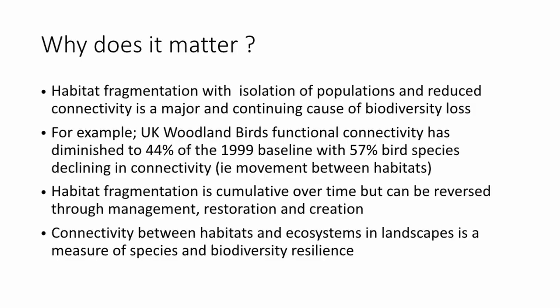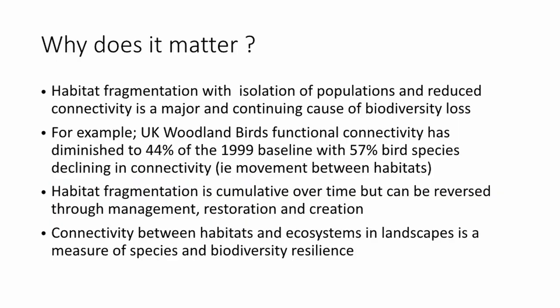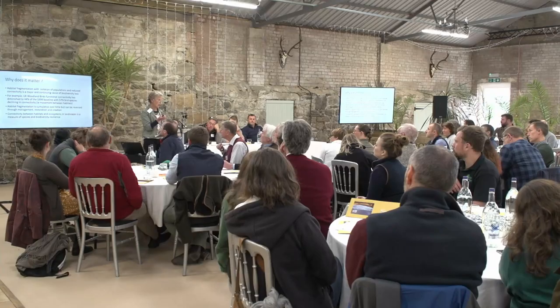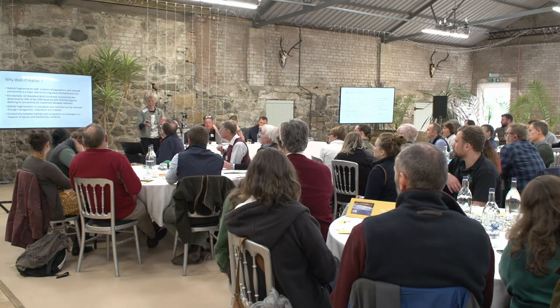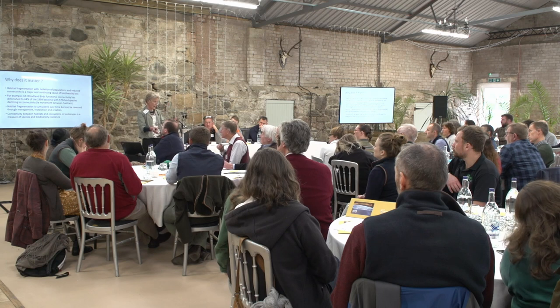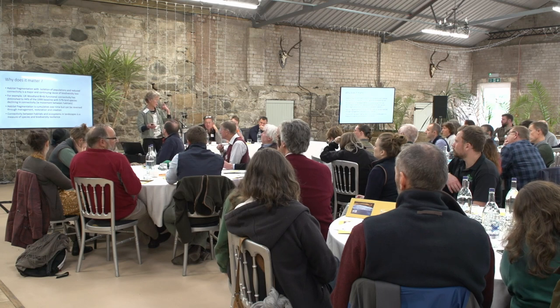For example, UK woodland birds' functional connectivity has diminished to 44% from a 1999 baseline. Ecologists have been looking no longer at individual species, but at species activity and the dispersal from semi-natural habitats out — and they can only go out if there are appropriate corridors. 57% of bird species' particular connectivity has declined since 1999. This isn't a measure of the individual number of species lost; it's a measure of how active they can be, and their activity is dependent entirely on food, shelter, and shelter from predation.